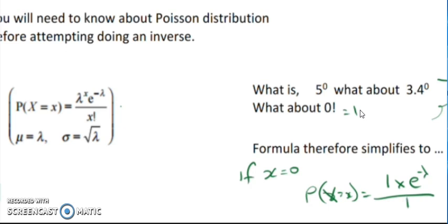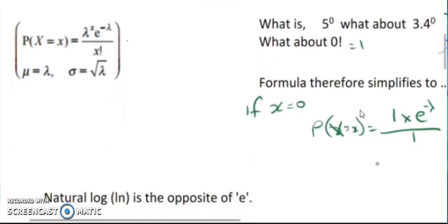So multiply by 1, divide by 1. That just simplifies down to the probability of x equaling 0 is equal to e to the negative lambda. So our formula simplified down quite a bit.